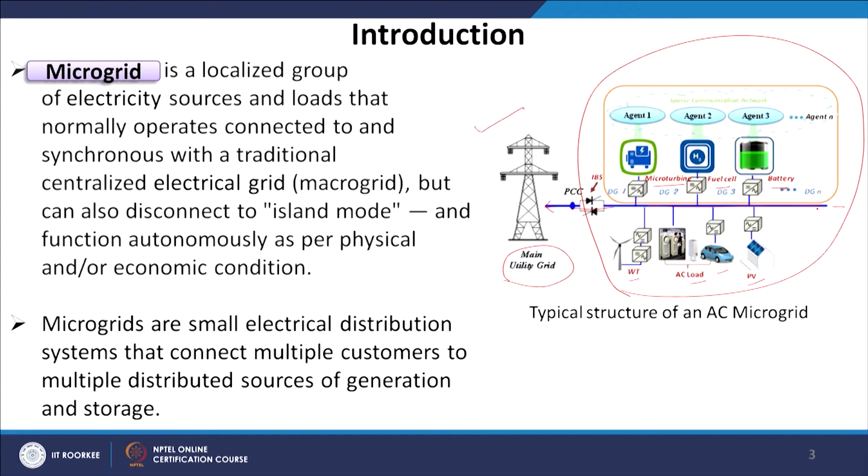Microgrids are small electrical distribution systems — they could be either 100 kilowatts or a few megawatts — that connect multiple customers to multiple distributed sources of generation and storage. Please keep in mind that a microgrid is also a small distribution system with low capacity that can accommodate many different types of distributed generation along with storage simultaneously.